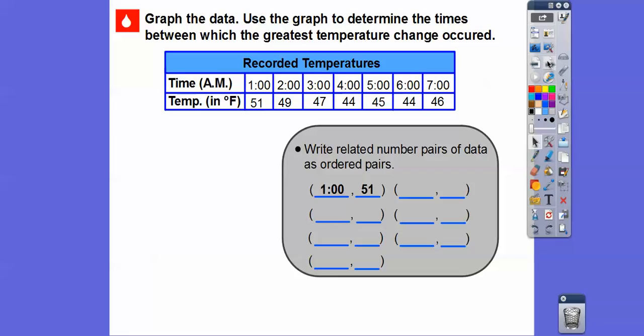So we're going to write the related number pairs of data as ordered pairs. So here, this is the 1 o'clock, and it was 51 degrees. So this is going to be the time. The first ordered pair is going to be the time. And then this is going to be what temperature it is. Now, let's go ahead and put all the times down. Remember, we talked about this in the last lesson. The top row right here is always our X column, and the bottom row is always our Y column.